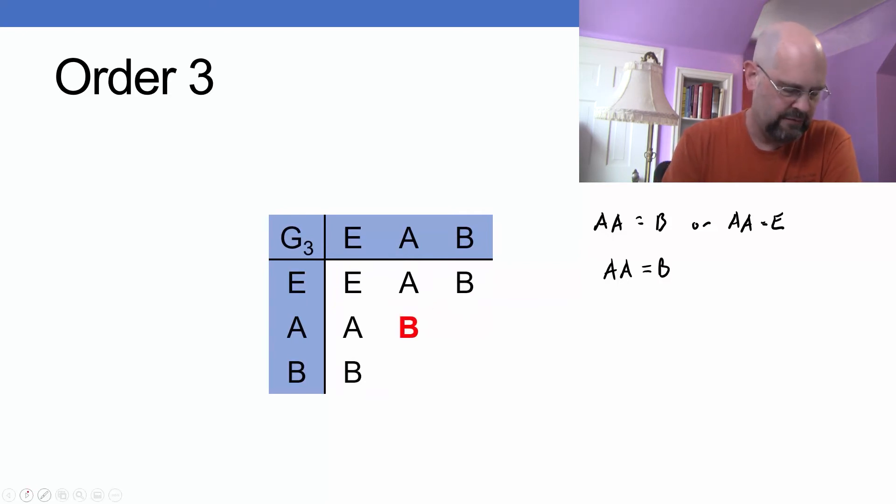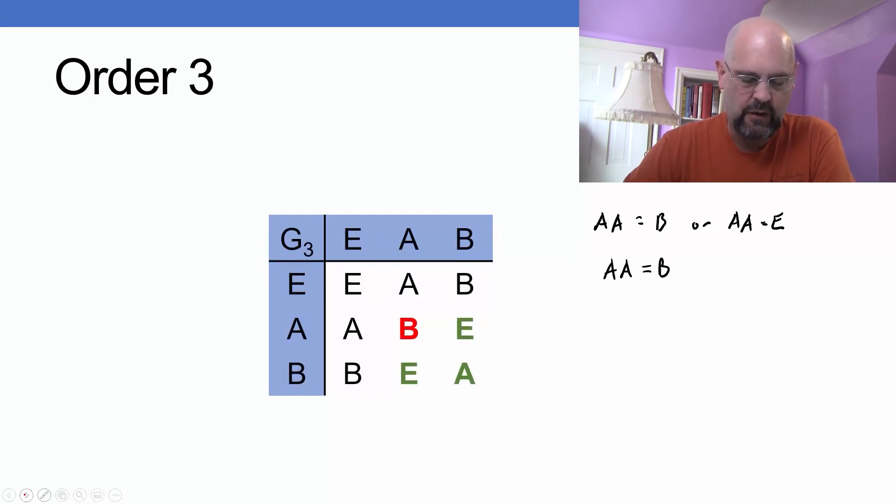Instead, it's going to be B, and then we can fill in. So now A times B is E, B times A is E, the reciprocal of each other, and B times B is A, and this now works.